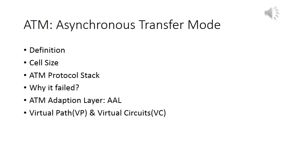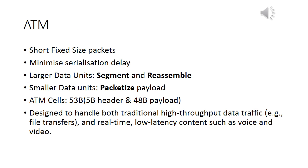First of all, Asynchronous Transfer Mode — ATM. Under ATM, short and fixed-size packets carry information. Short packets increase speed and minimize serialization delay. Fixed-size packets mean applications with large data units are segmented at the sender and reassembled at the receiver, while applications with smaller data units lead to waste. Packetization of payload introduces delay. ATM cells are 53 bytes: 5-byte header and 48-byte payload.